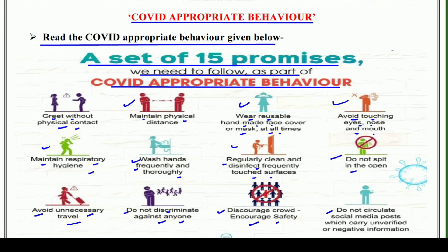Next is: do not circulate social media posts which carry unverified or negative information. Kabhi bhi social media ki aisi post ko circulate na karein jo verified na hoon, ya phir negative information hoon. Toh aisi information ko aap circulate mat kijiye. Kyunki — jaisi WhatsApp hai, Facebook hai, Twitter hai, Insta hai — kai baar jo khabren hoti hain, jo news ya information hoti hai, woh unverified hoti hai. Toh hum usko waise hi circulate karte jaate hain, aur logon mein panic failta rehta hai. Ya negative information ko hume circulate nahi karna chahiye — toh yeh bhi COVID appropriate behavior ka hi ek hissa hai, jisse bahut zyada nuksan bhi ho sakta hai.